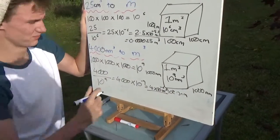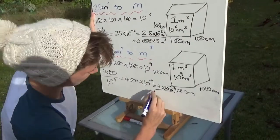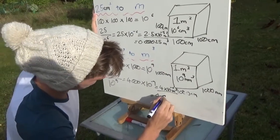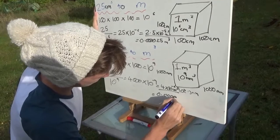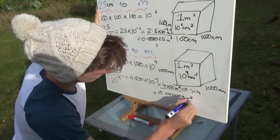Or as a decimal we get 0.000004 meters cubed.